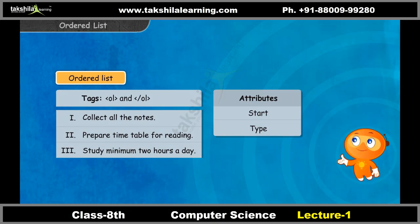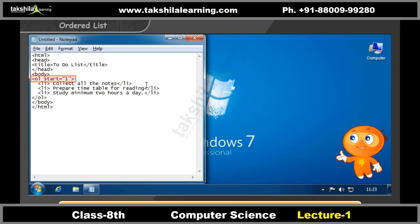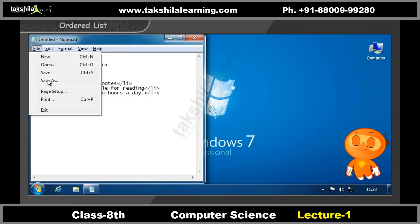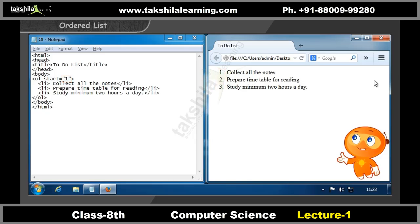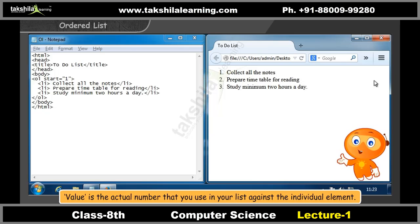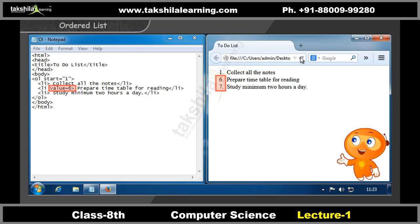You can use the attributes start and type to specify the type of numbering. The start attribute defines the value from which an ordered list should start. By default, ordered lists start at 1. The value attribute may be used on an individual LI element within an ordered list to change its value within the list. The number of any list item appearing below a list item with the value attribute will be recalculated accordingly.